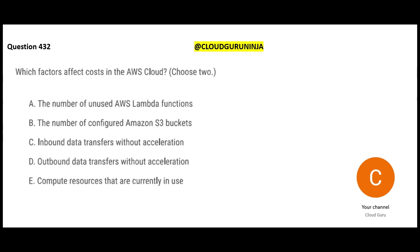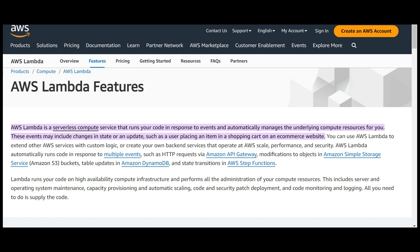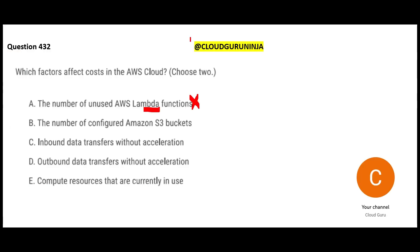The next question asks which factors affect the cost of the AWS cloud. Option A mentions unused Lambda functions - this is wrong because Lambda is a serverless compute architecture with no server in the background. You are charged only when Lambda is running. It auto-terminates after 15 minutes, so there is no concept of unused Lambda functions.